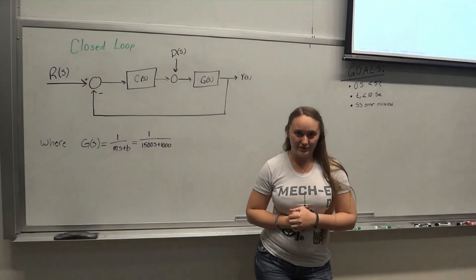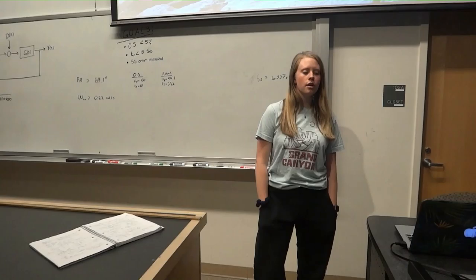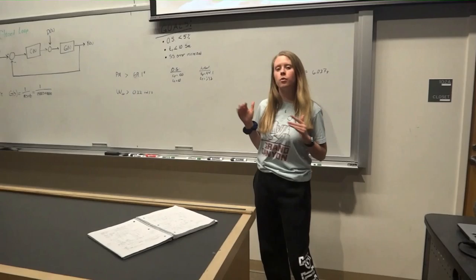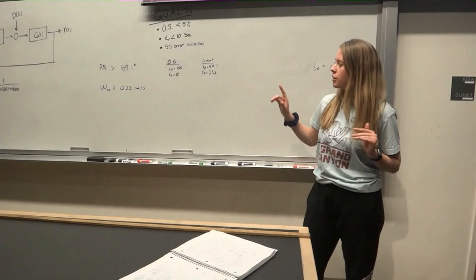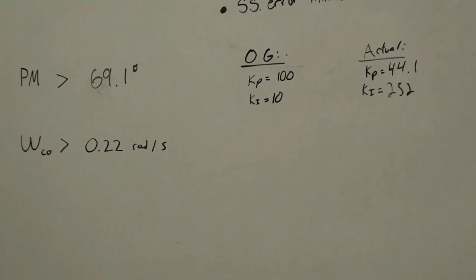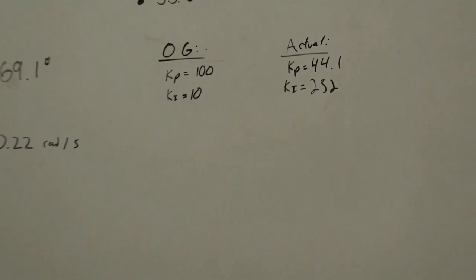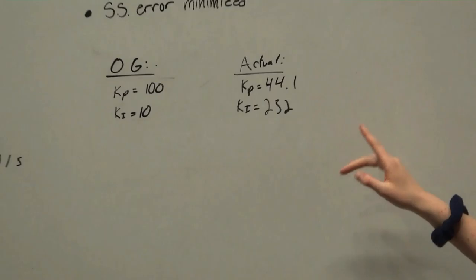In order to find the appropriate values for our pi controller, we used MATLAB's control system designer to find these values. We started out with a kp of 100 and a ki of 10, and then we played around with the graphs in order to reach our desired cutoff frequency of 0.22 radians per second and a phase margin of 69.1 degrees. Once we got the parameters all in the right frame, we found out that the actual values were the kp of 44.1 and a ki of 232. These are the values we ultimately used to verify the functionality of our system.